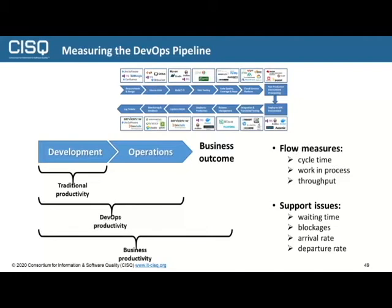We can look at arrival rates and departure rates both at the overall DevOps pipeline level and at sub-parts of the pipeline covering builds, testing, and a number of other activities. The lean thinking really gives us strong advantages in measuring productivity and efficiency across this pipeline.